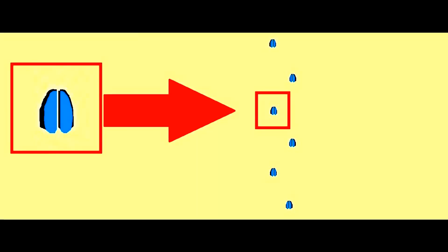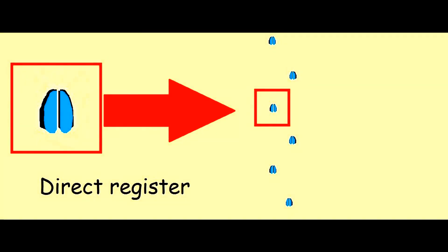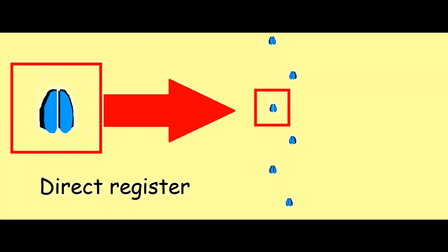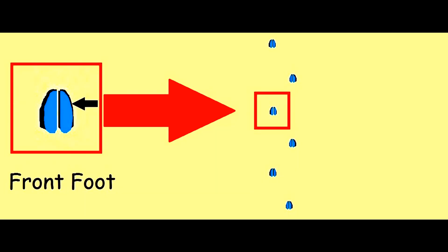What looks like one track is actually two tracks. This is called a direct register. It happens because as the animal is walking, the rear foot — shown here in blue — steps directly where the front foot was, shown here in black, underneath.